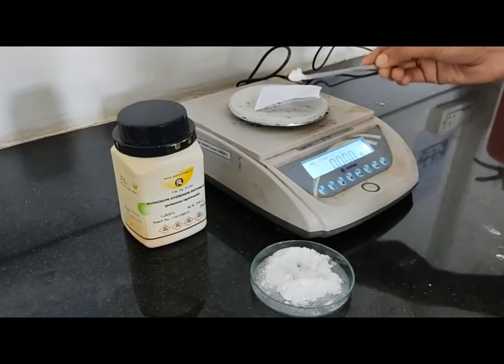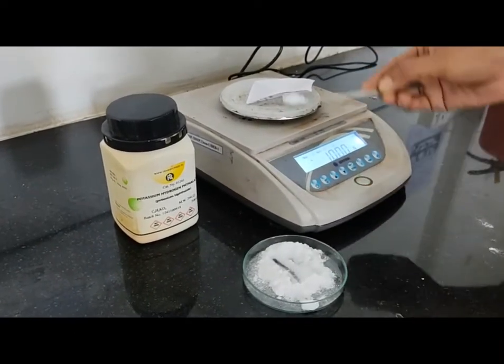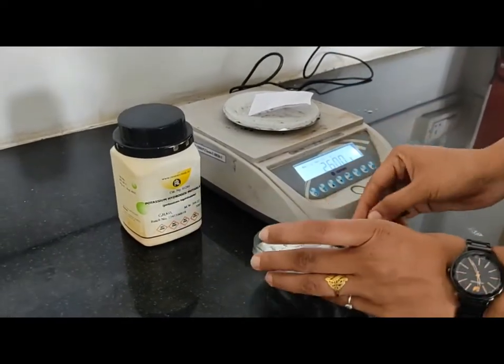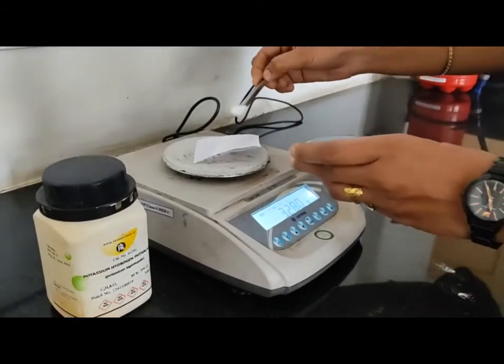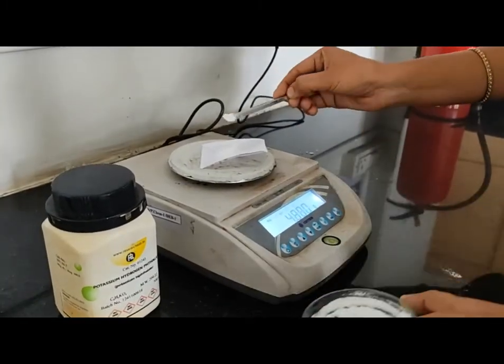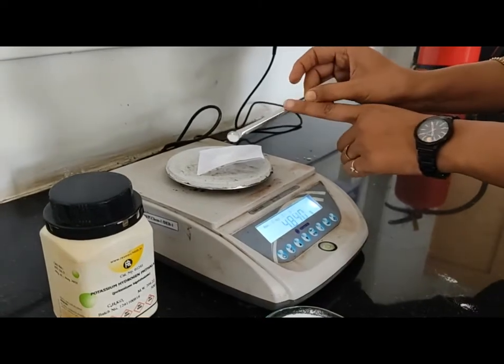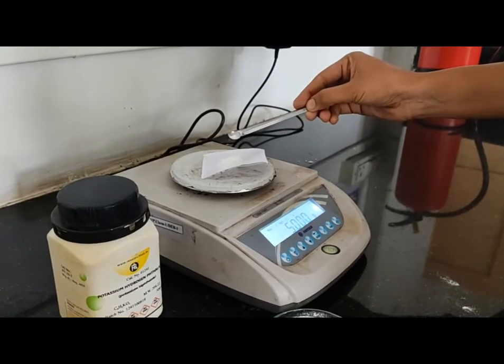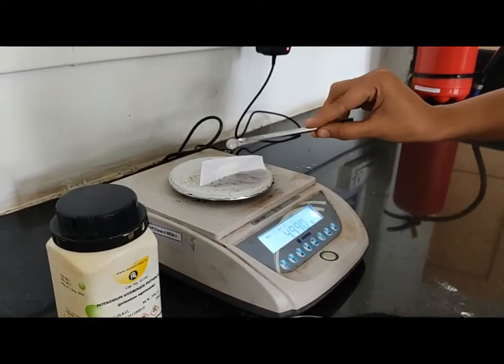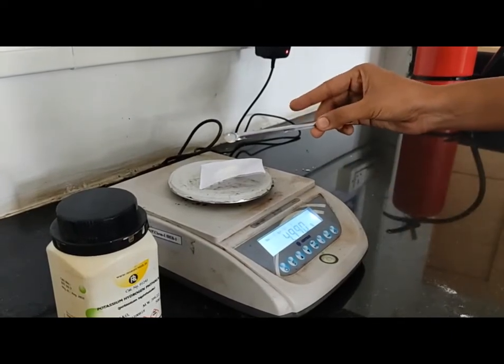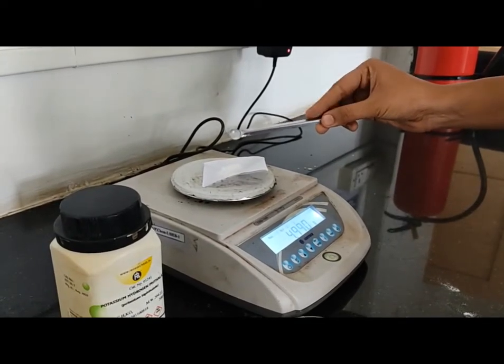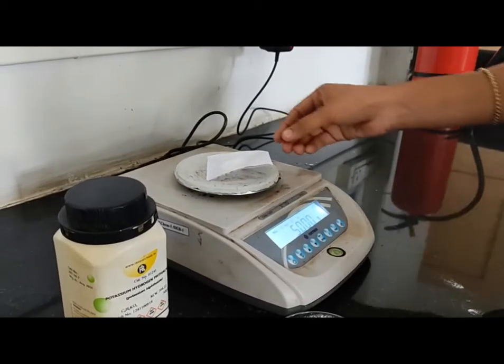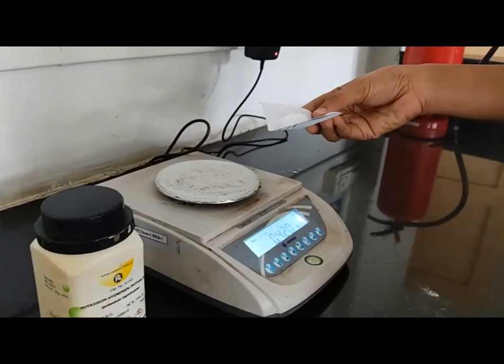Now for standardization purposes, we have to weigh 5 grams of potassium hydrogen phthalate. Let's measure 5g of potassium hydrogen phthalate.